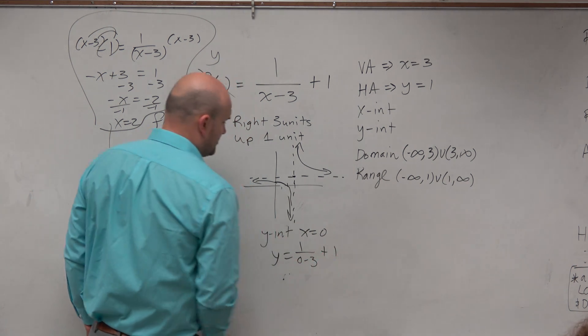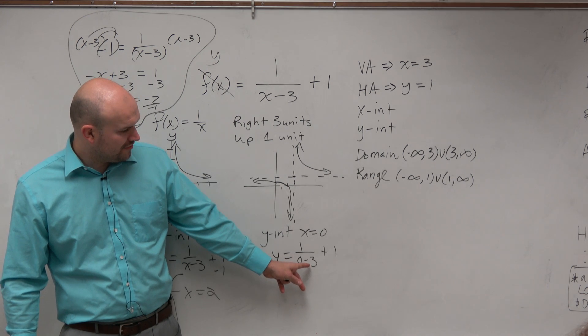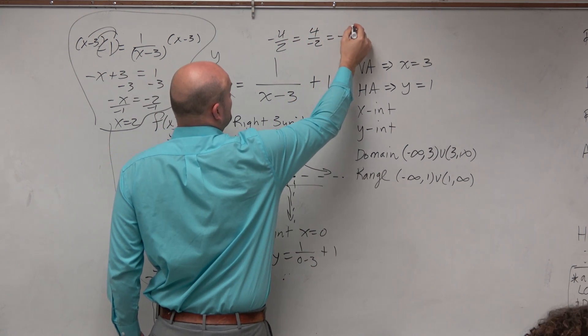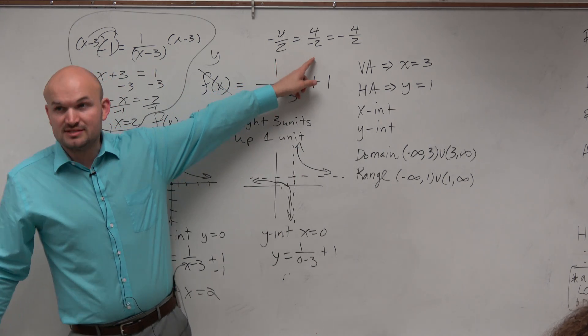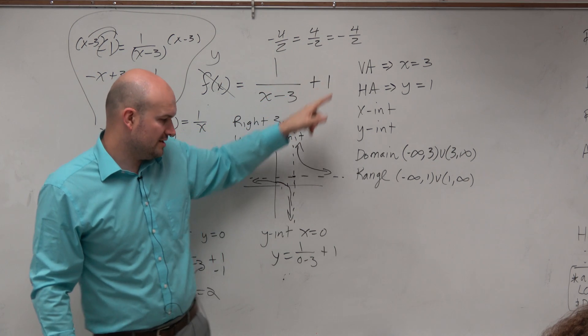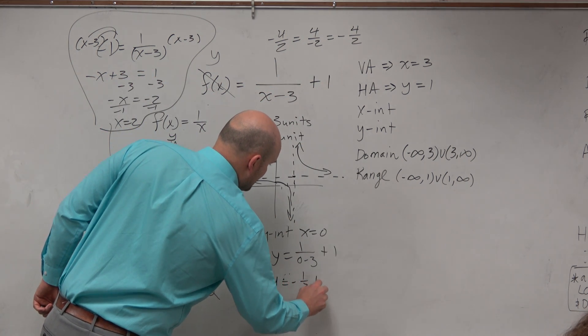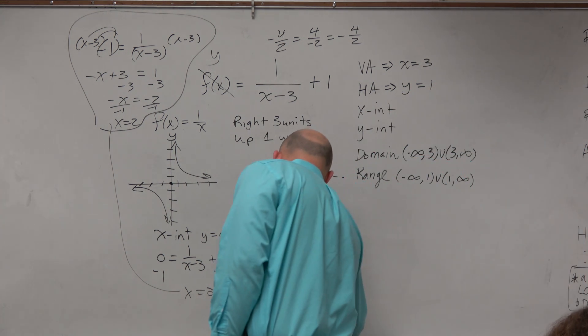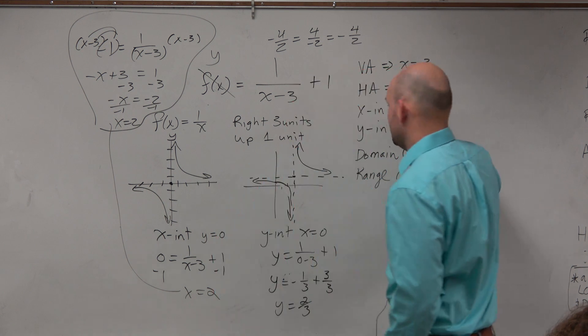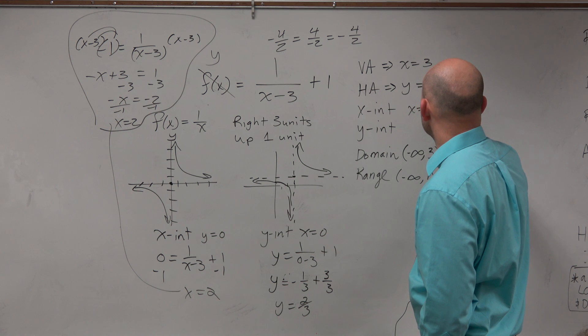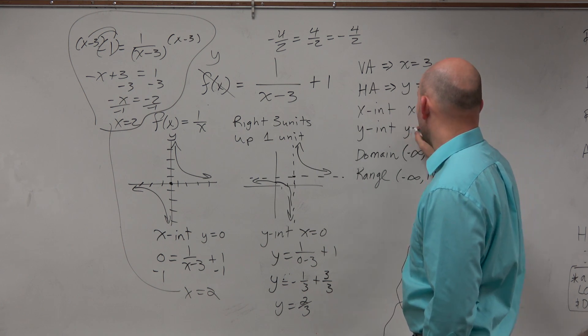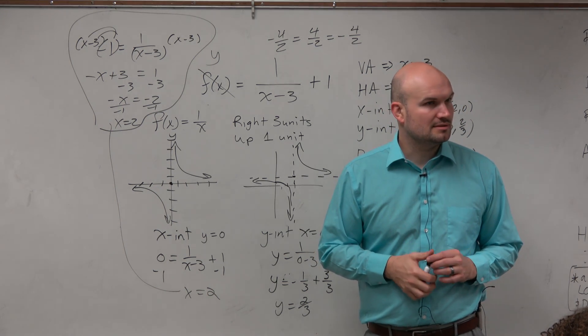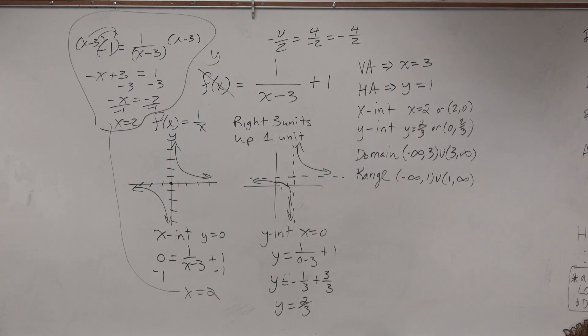So all you got to do is just plug in 0. 1 over 0 minus 3 plus 1. Well, if this is going to have a denominator of 3, remember that the negative can go up front. It doesn't matter if it's negative 4 over 2 or 4 over negative 2, or you just put the negative in front. Those fractions are all the same. So don't get stuck because a negative is in the denominator. Therefore, I can rewrite this as y equals negative 1 third plus 1, or a better number would be 3 over 3. Just want to make our fractions easy. y equals 2 thirds. So, the x-intercept is x equals 2, or the coordinate point 2 comma 0. And the y-intercept is y equals 2 thirds, or the coordinate point 0 comma 2 thirds.